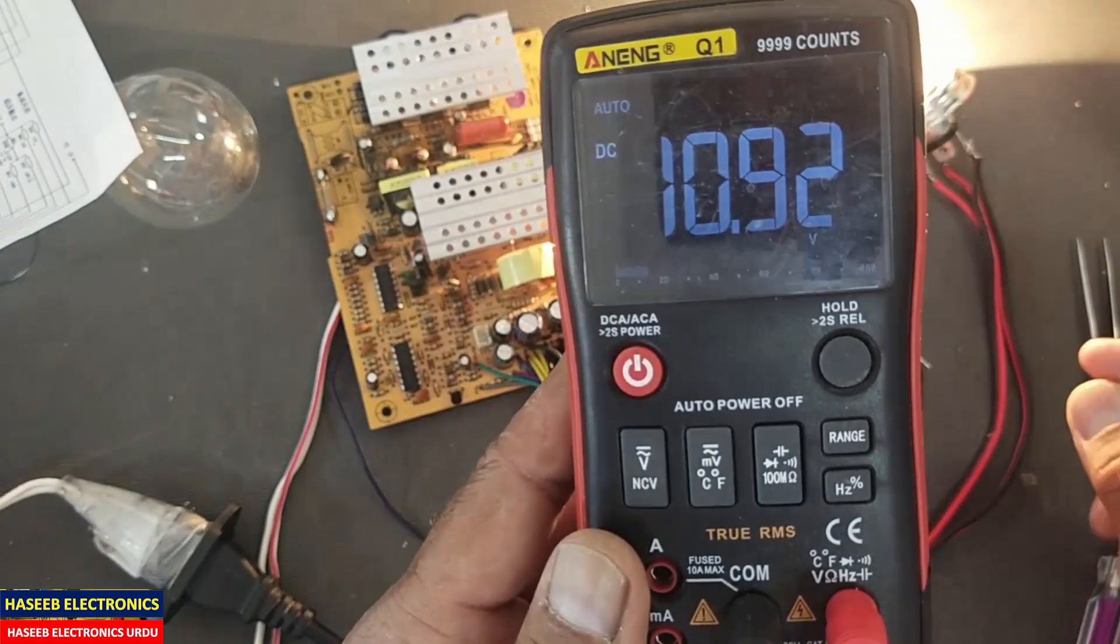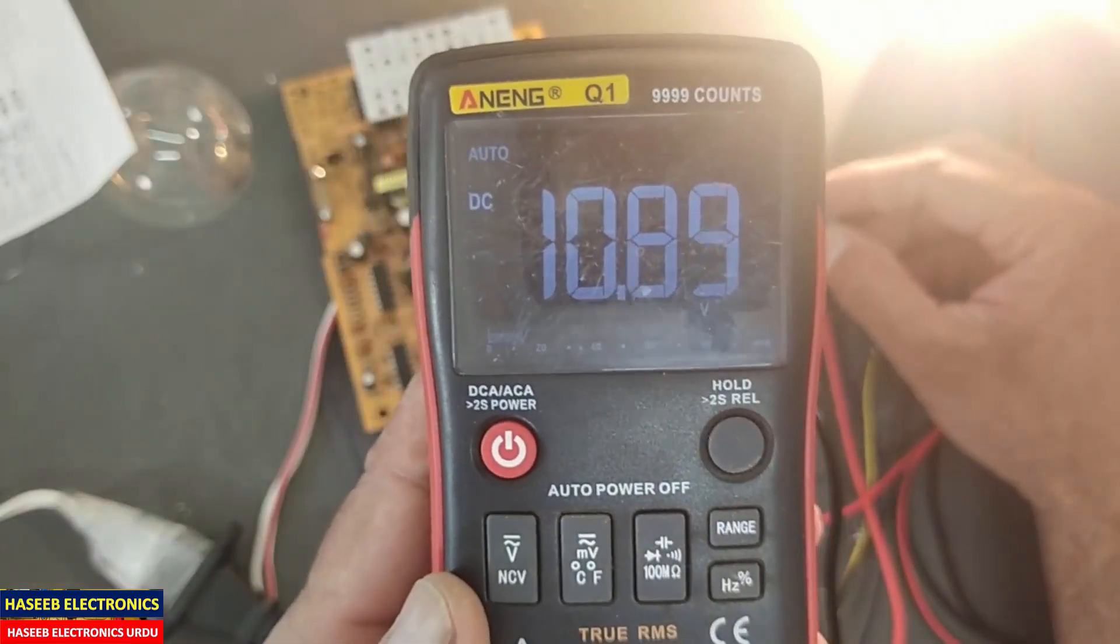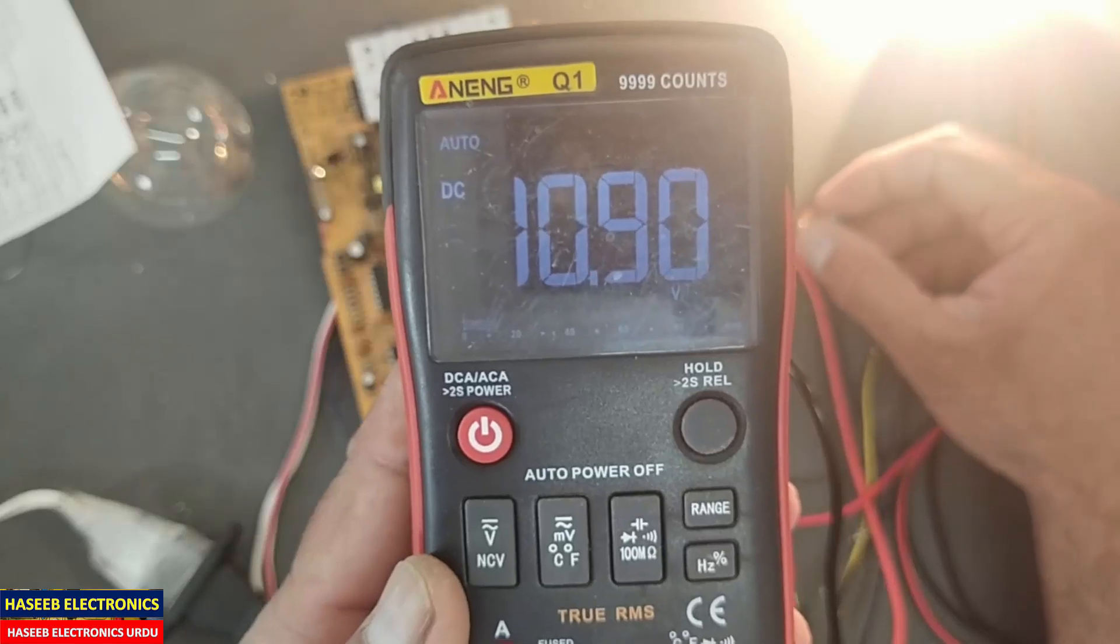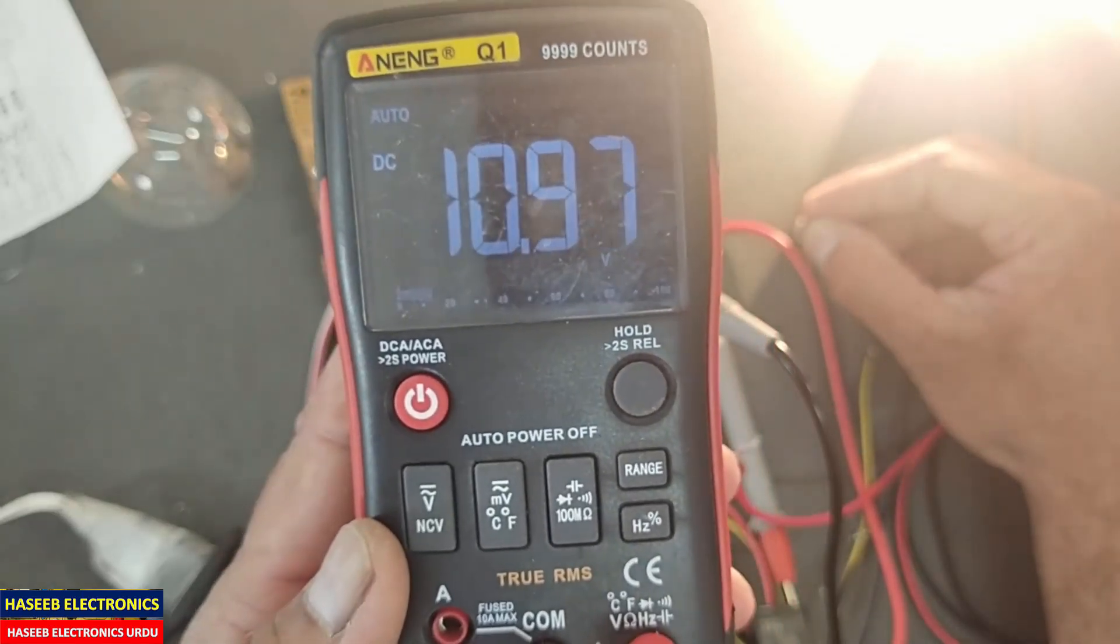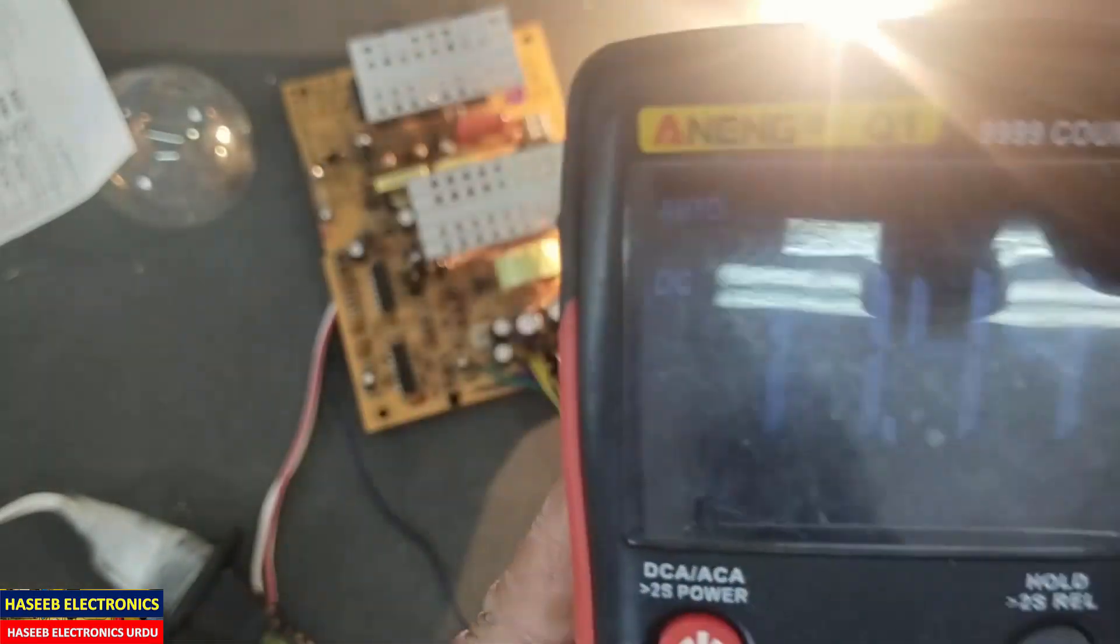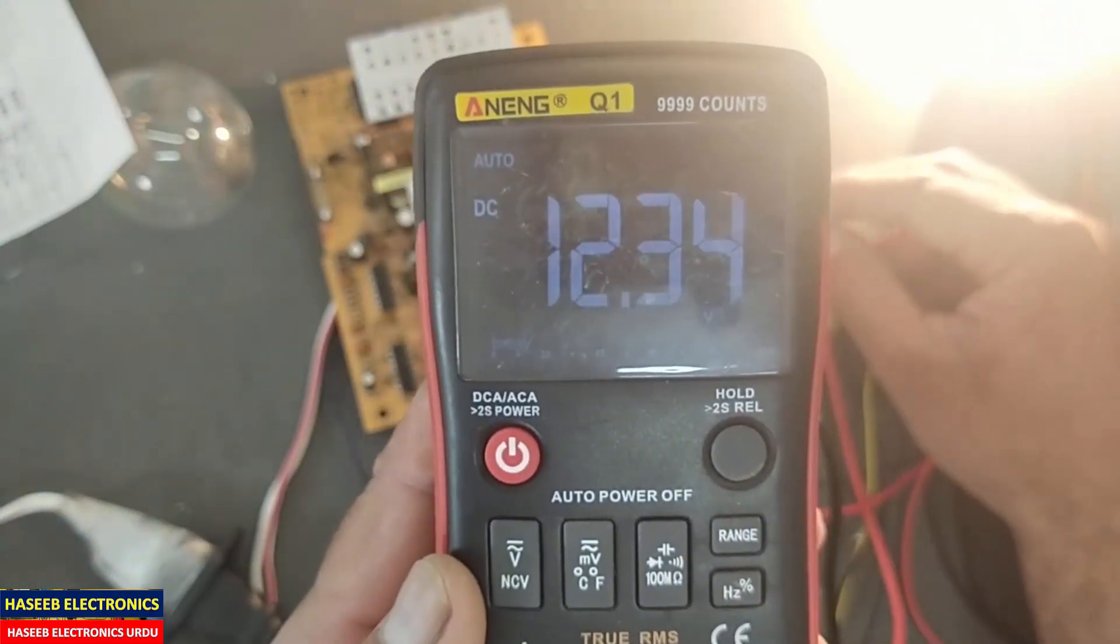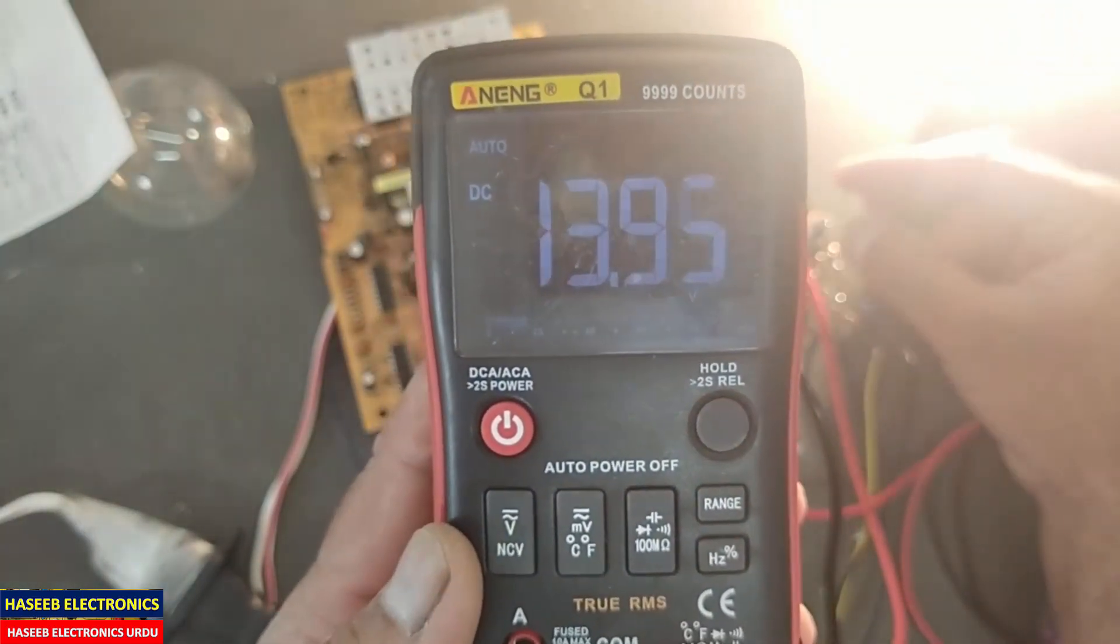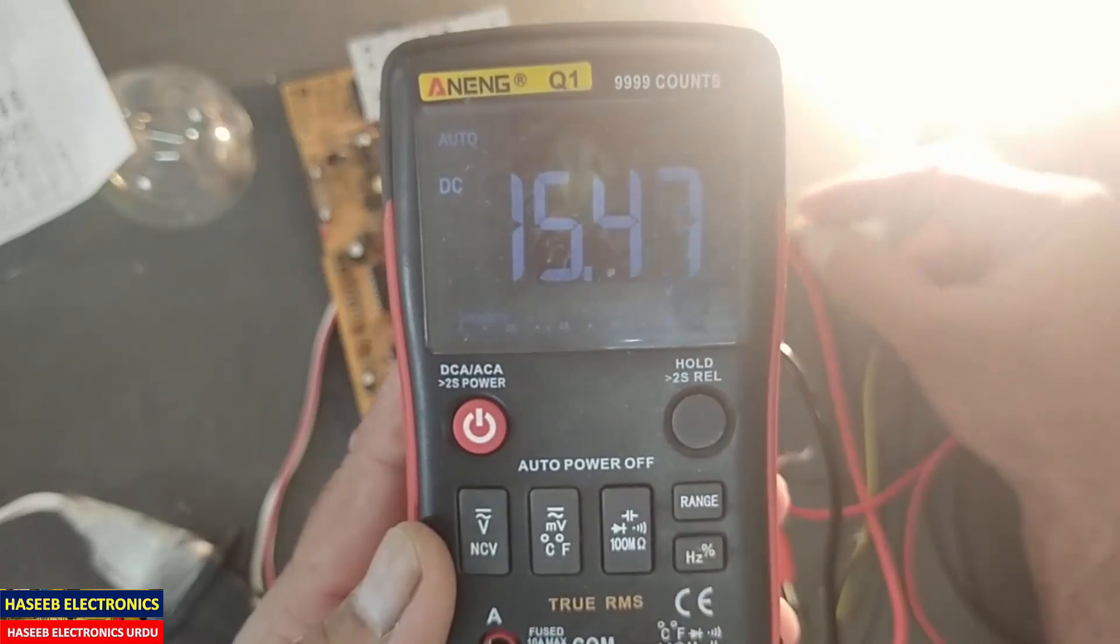Assalamu alaikum warahmatullahi wabarakatuh, friends, welcome back to the channel. In this session, I modified this power supply. We are taking 10.9 volts from the 12 volt section, and now I am increasing the voltage. The lamp is glowing. 12.34, 13 volt, 14 volt, 15.48 volt.